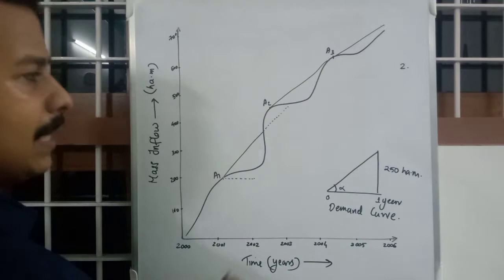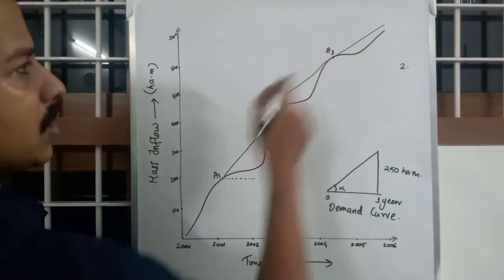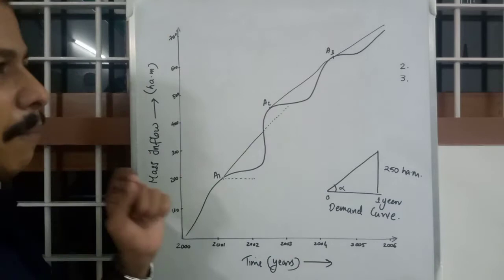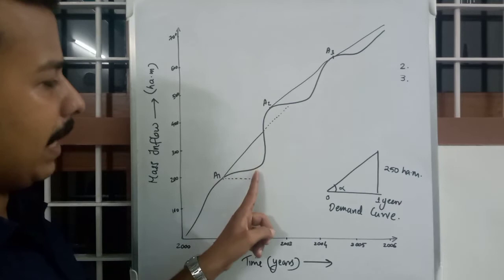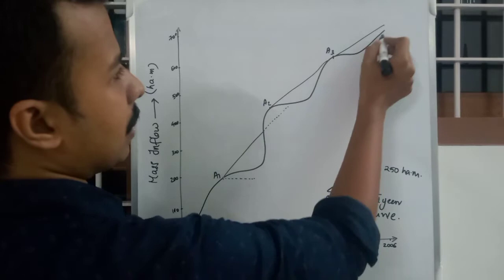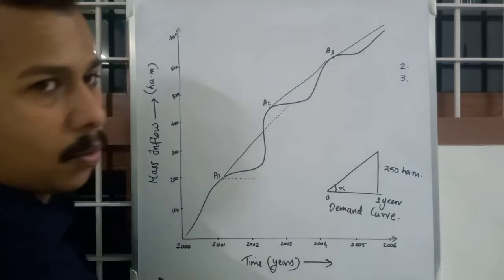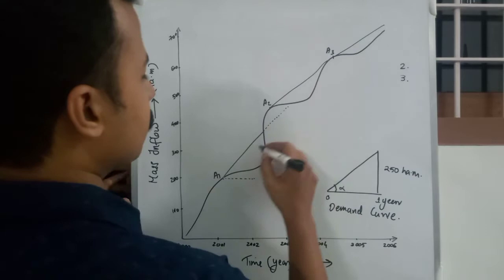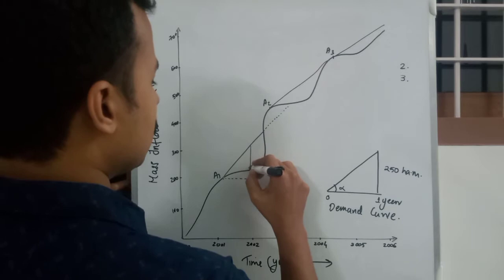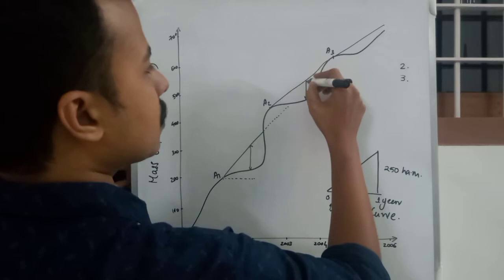This line will be parallel to all three demand lines. Third step: measure the maximum vertical intercepts between the demand curve and the inflow curve. You have the inflow curve and the demand curve as a solid line that we have just drawn. Measure the maximum vertical intercept for each one.